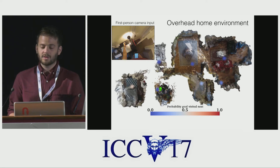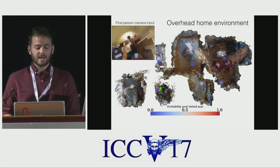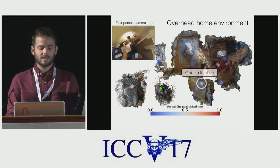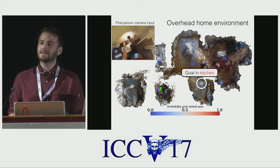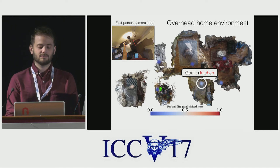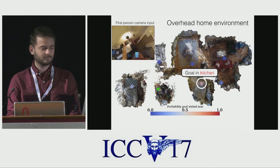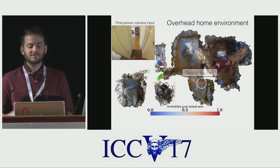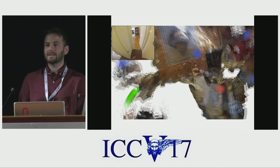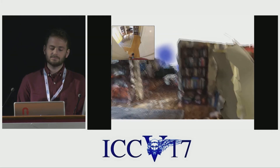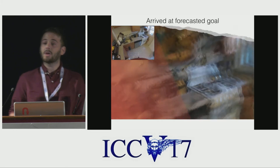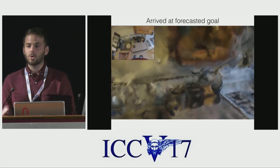After I start the video, the person will pick up a mug, and the goal in the kitchen will turn red. This means our model becomes confident the person will go to the kitchen. Now we visualize the person's point of view inside the environment. The person arrives at our model's forecasted goal inside the kitchen.